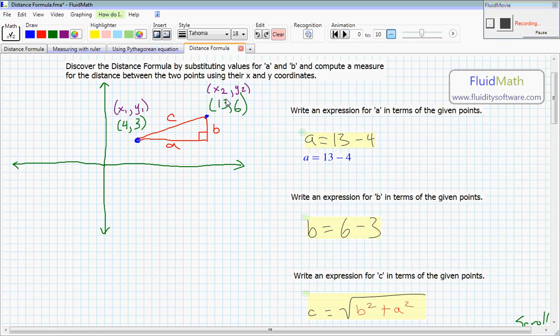we could have said a is equal to x2 minus x1. Okay? And b is equal to y2 minus y1. Let's get rid of this and this. Move this up.